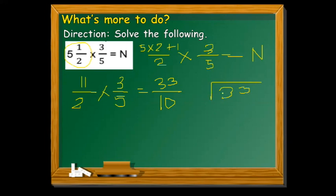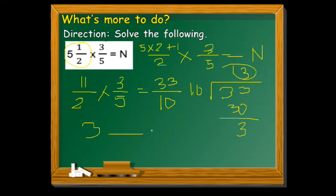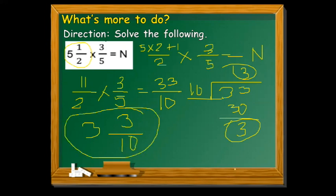Since the numerator is larger, we divide to find the simplest form: 33 divided by 10. Ten goes into 33 three times; 10 times 3 equals 30; 33 minus 30 equals 3. So the whole number is 3, the remainder 3 becomes the numerator, and the denominator remains 10. The answer is 3 and three-tenths.